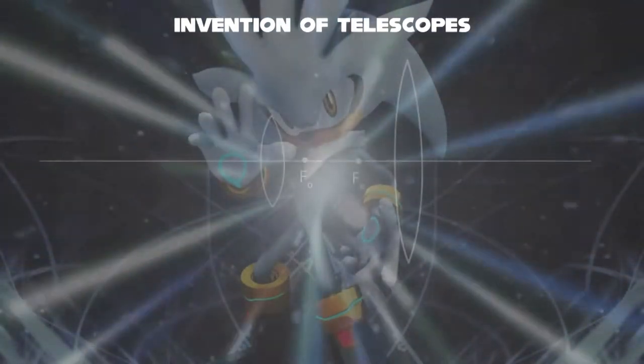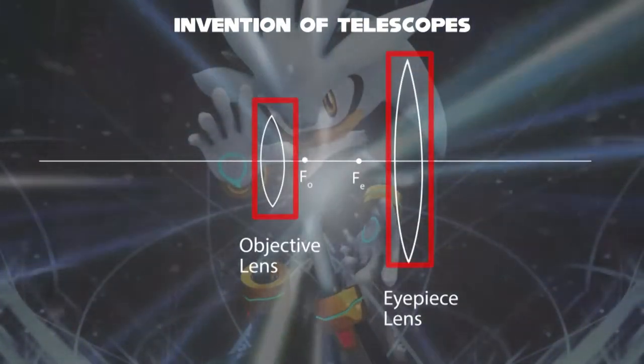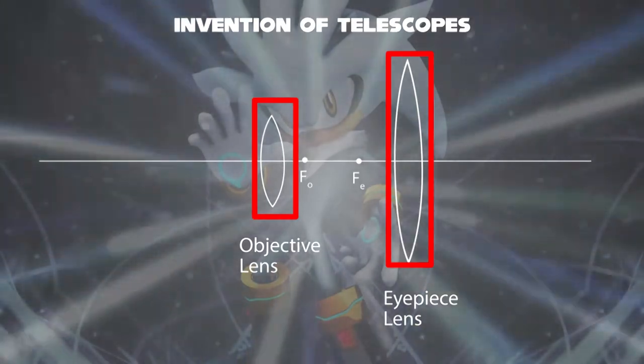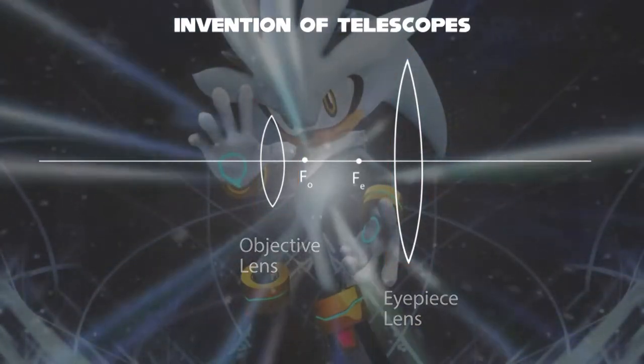In terms of physics, you may be familiar with one of the lenses. With both convex lenses, one is objective and the other eyepiece.